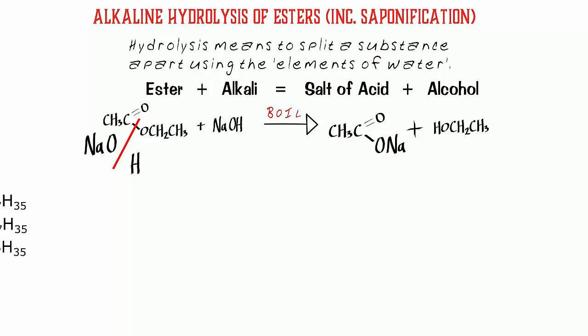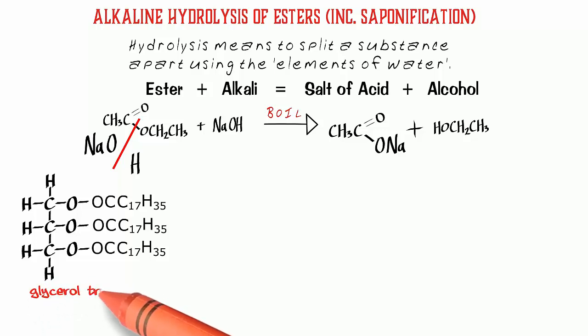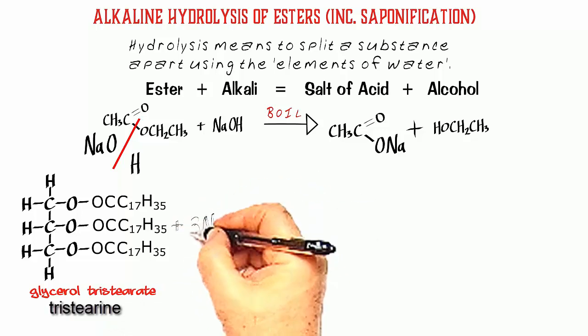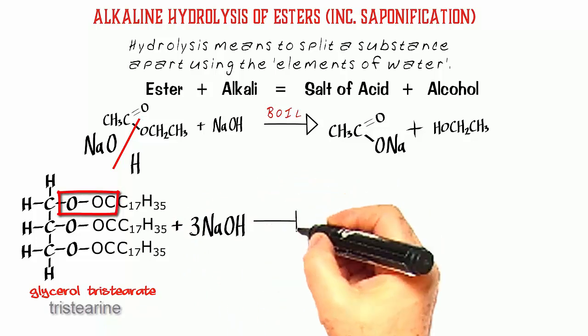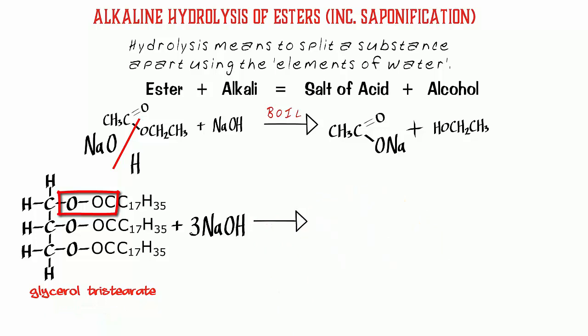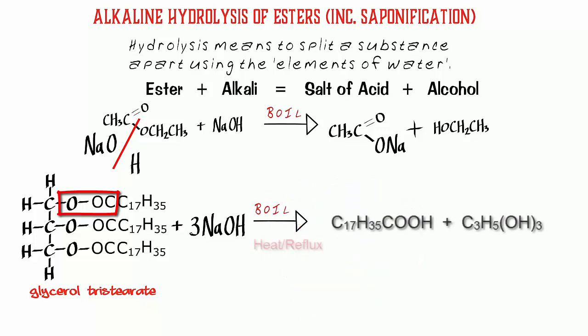Let's take a look now at the hydrolysis of complex esters, namely fats and oils. The hydrolysis here produces a soap. I've taken glycerol tristearate, also known as tristearin. It's a triglyceride or triester. As there are three ester linkages there, I'm taking three moles of sodium hydroxide per mole of the fat. Again, I would boil or heat on to reflux to bring this reaction about.